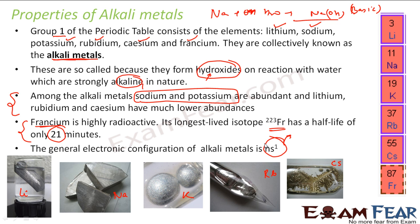The general electronic configuration for alkali metals is NS¹. As I have told when discussing the atom chapter, when you put elements in a group, they must have something unique in common. All elements in group 1 have the electronic configuration NS¹. This is how it looks: lithium, sodium, potassium, rubidium, cesium — all NS¹.